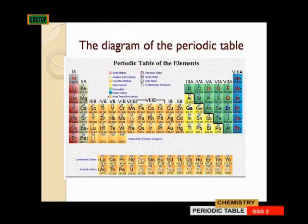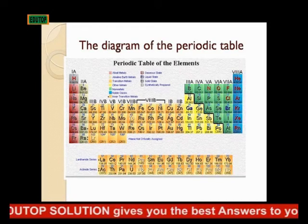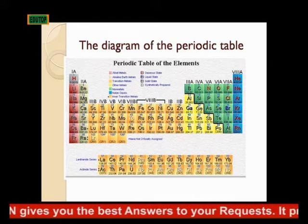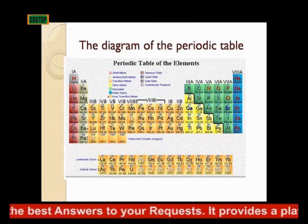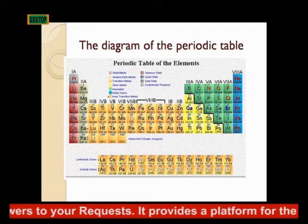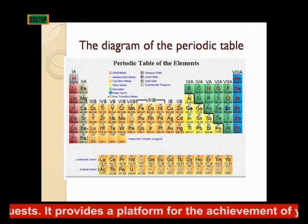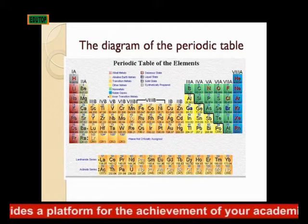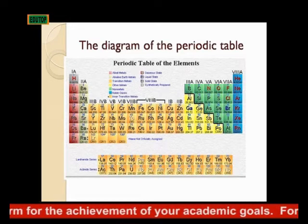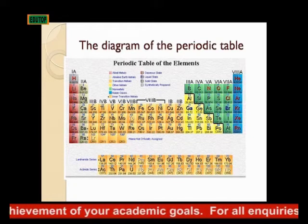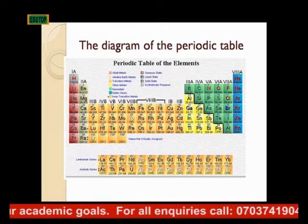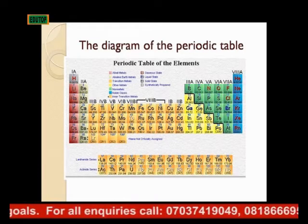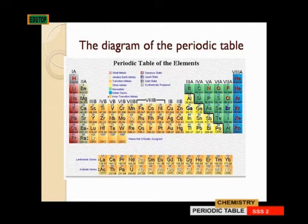Looking at the diagram of the periodic table, it classifies various elements — more than 30, because between atomic numbers 21 and 30 we have the transition elements. They are characterized by partially filled d-orbitals. Zinc and copper are exceptions, as they both have 10 electrons in the d-orbitals, which is why they are not classified as true transition elements.